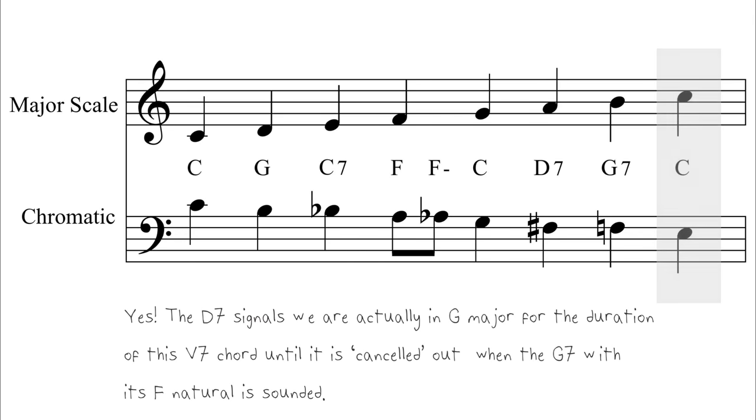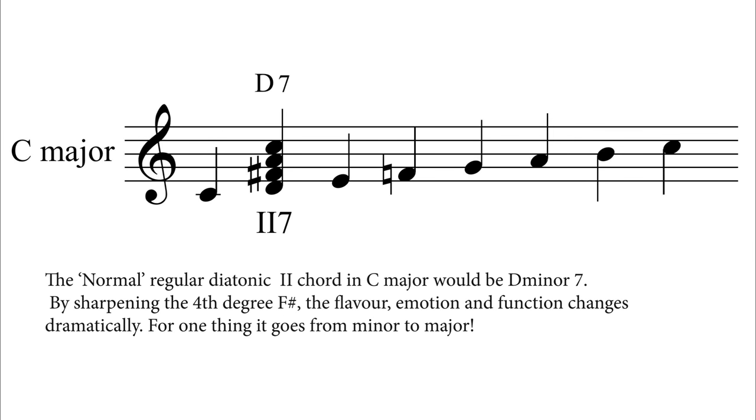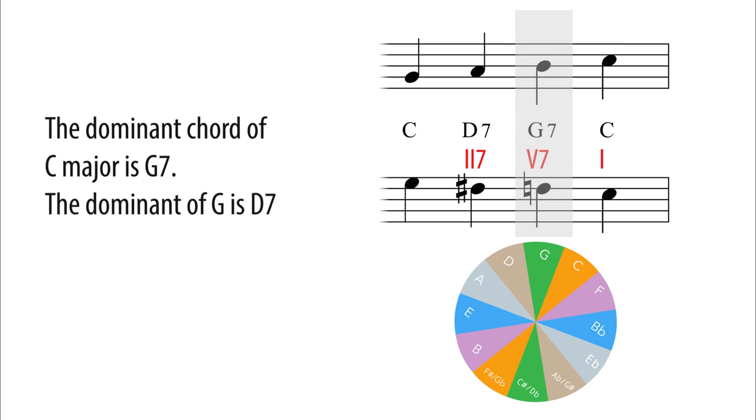We can also think of this chord, D7, as a II7 chord, also known as a secondary dominant, as it is the dominant of the dominant chord, the dominant, in this case, of G7, which is the dominant of C.